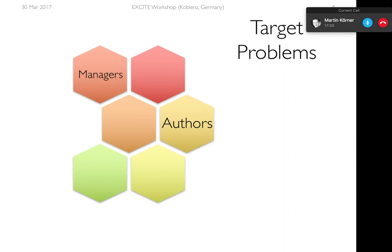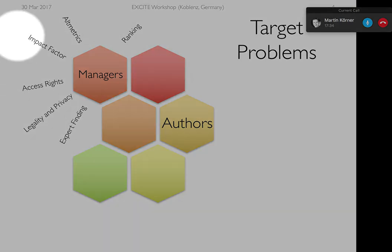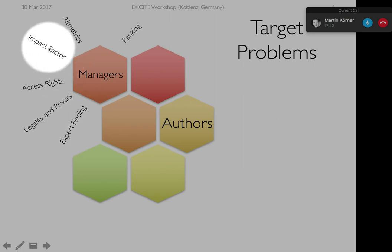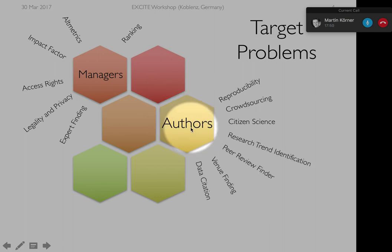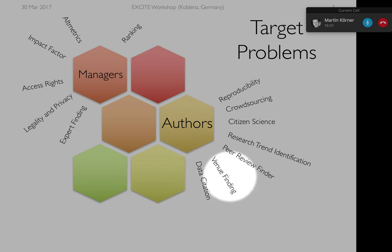When we think about scientific articles, we have certain target problems. One is about managers — what do they do with scientific documents? Maybe they care about ranking institutions, finding an expert in deep learning, impact factors, or altmetrics. We also have the authors: we look at citations and many other things, like finding data citations, figuring out the right venues to publish, crowdsourcing, or reproducibility of science.